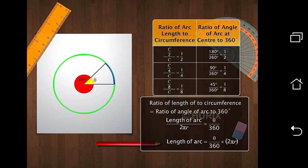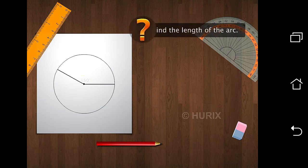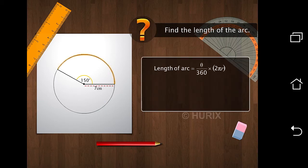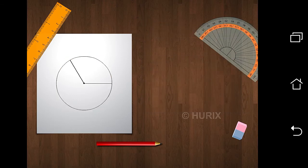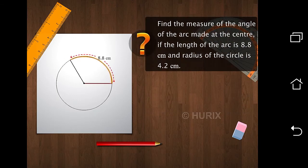Thus, the length of the arc is theta over 360 times the circumference of the circle. Now, if we know the angle made by the arc at the center and the radius of the circle, we can find the length of the arc by applying the formula. We substitute theta with the measure of the angle made by the arc at the center and put in the value of the radius of the circle, then simplify to find the length of the arc. Now, if you know the length of the arc and the radius of the circle, can you find the measure of the angle of the arc made at the center?